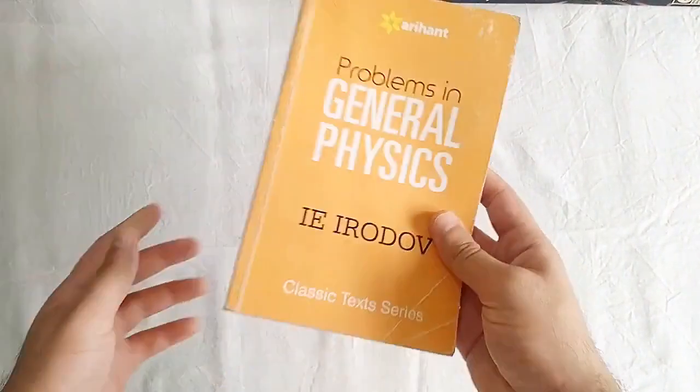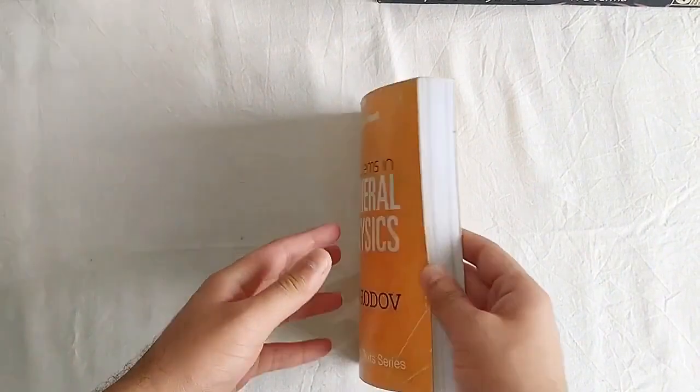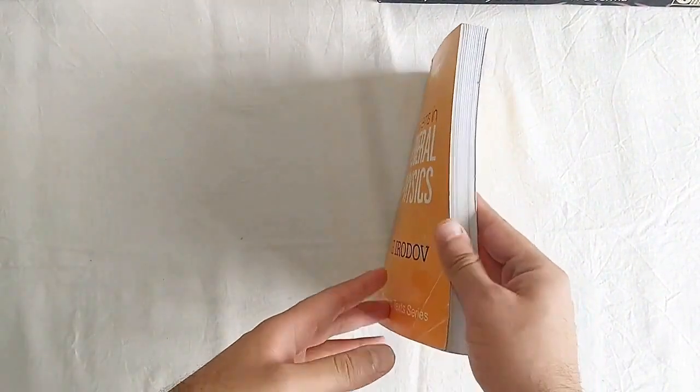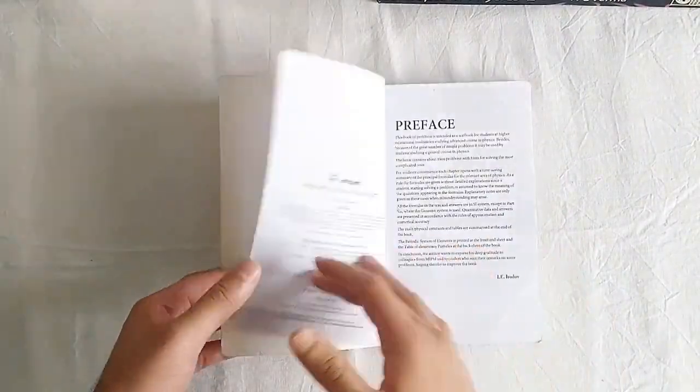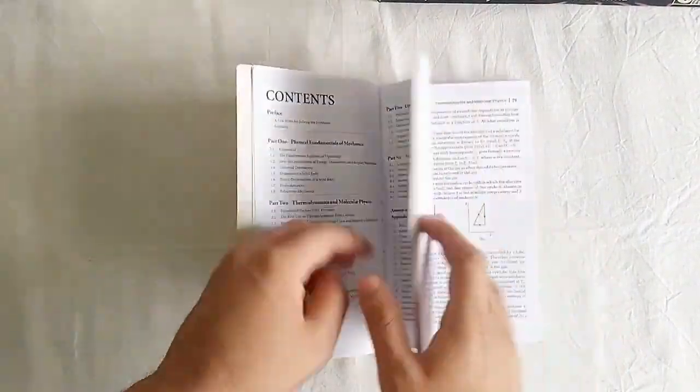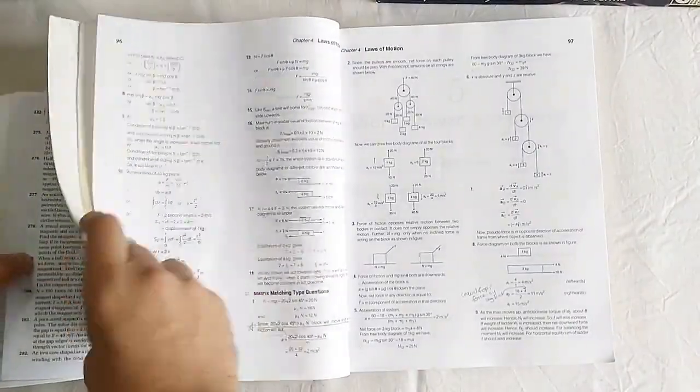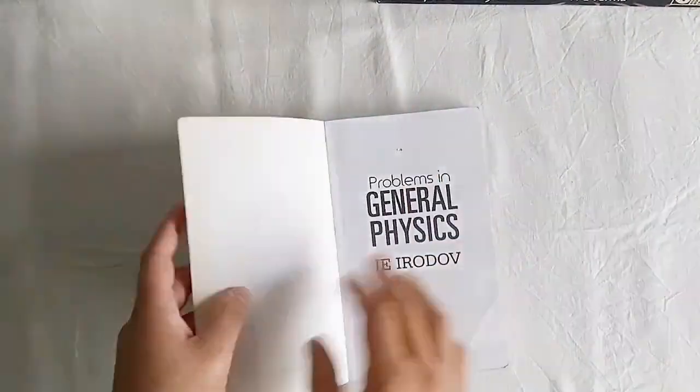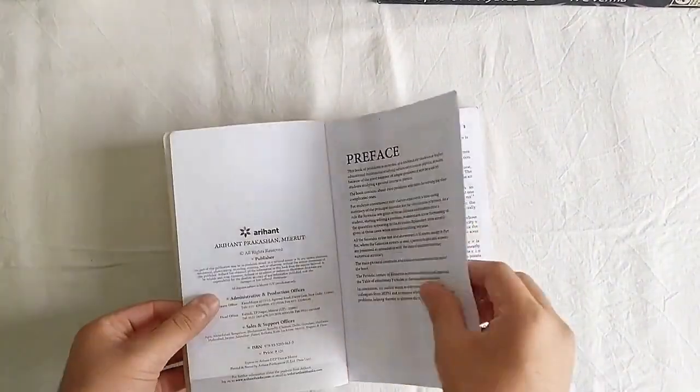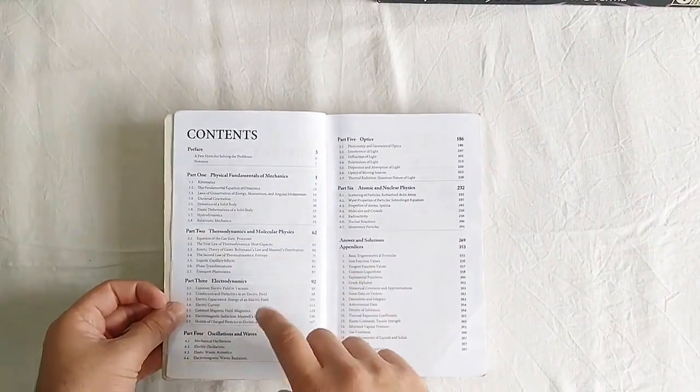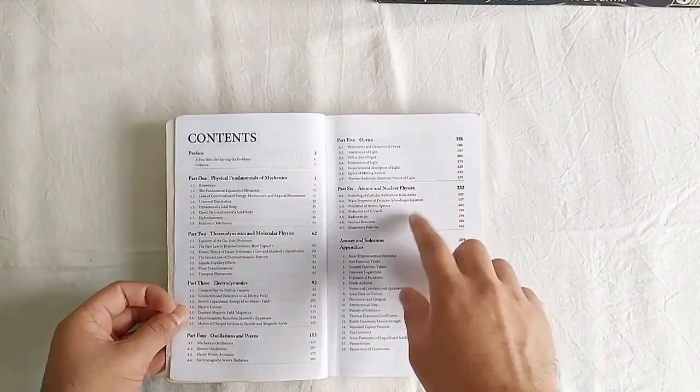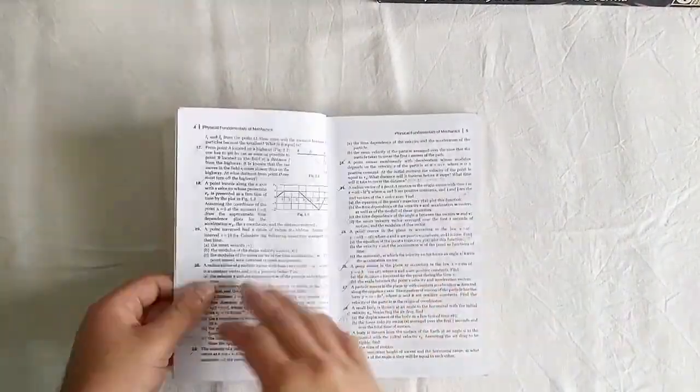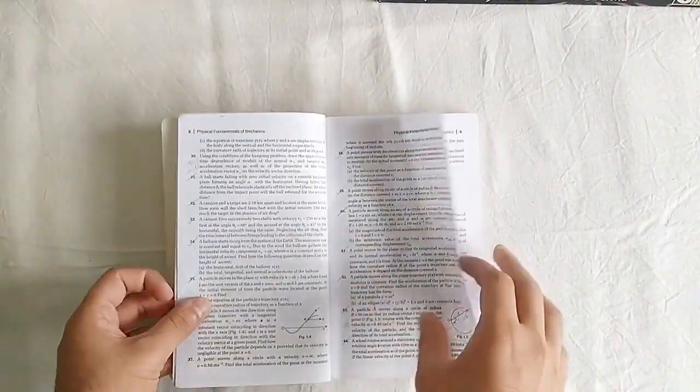Another book that I used in my first year was Irodov. Although this is a very small book, I have already made a flip through of this book. I'll put the link in the description. These are pretty tough questions and this is full of questions. As you saw, this book also had solutions to the questions. For Irodov, you have another book for solutions. You can buy them separately. And it covers mechanics, thermodynamics, electrodynamics, oscillations, optics, nuclear physics.